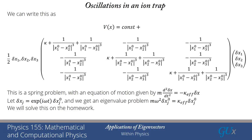That's all we have today for these two different applications of eigenvalues and eigenvectors within physics. One was the time evolution of quantum mechanics involving two-by-two matrices, and then we had the dynamics of motion of the ions, which had the three-by-three matrix that we had to work with.